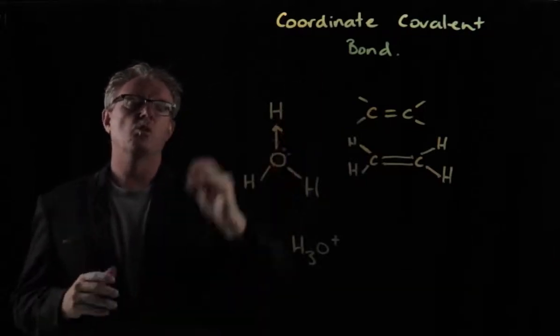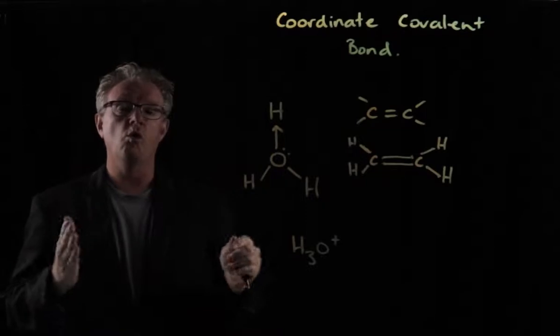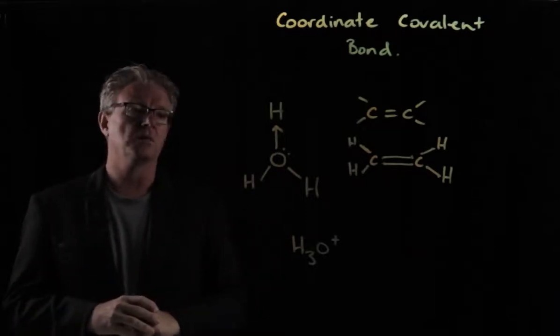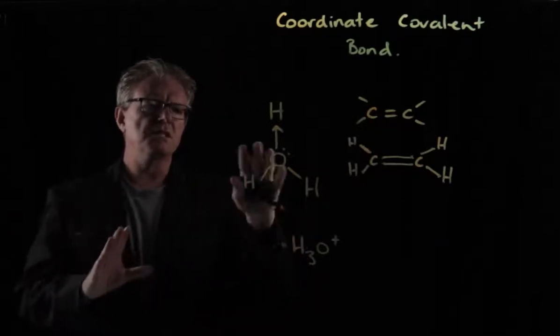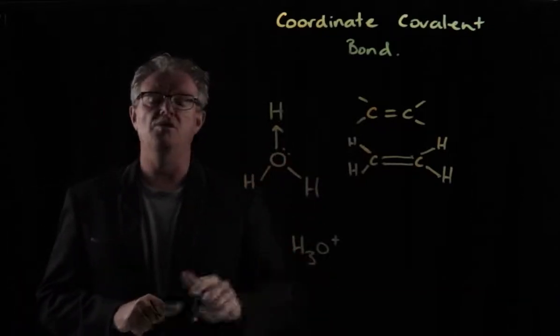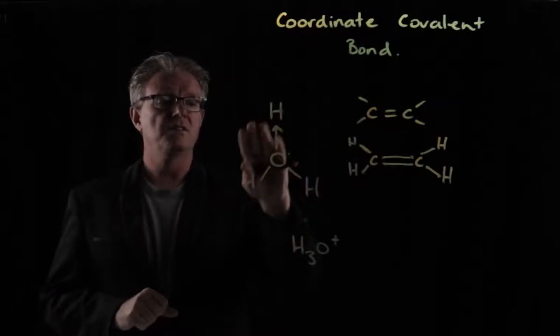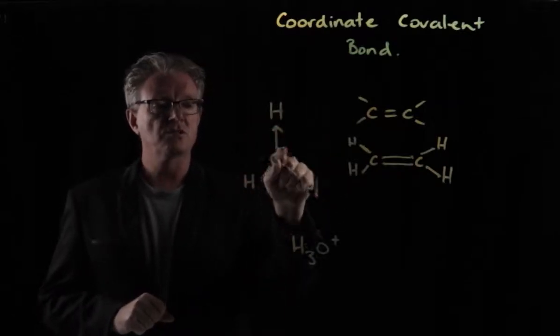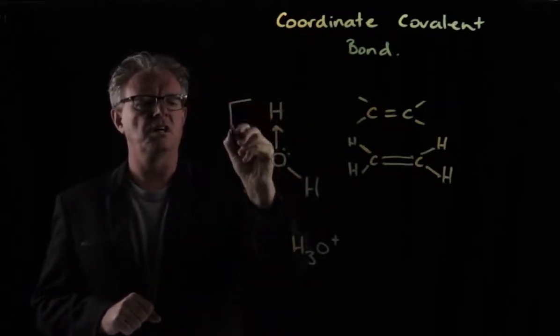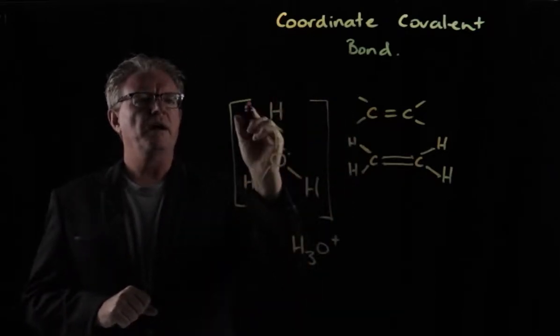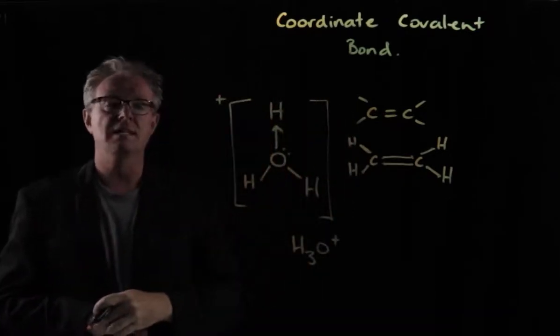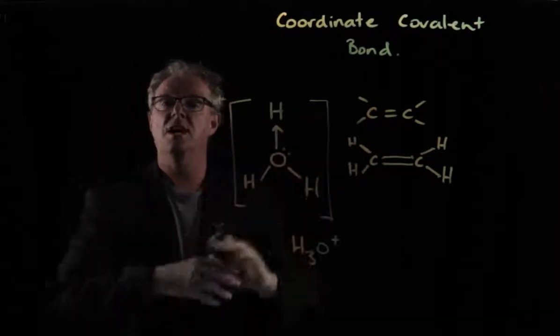And when that happens, we put an arrow to indicate that both of the electrons in that covalent bond are coming from the oxygen. And so that's called a coordinate covalent bond or a dative bond, depending upon what textbook you're reading. So this particular bond here is what's responsible for a hydronium ion. Now, of course, this central oxygen has a formal charge of plus one. And so what we do is we put brackets around that and just put a little plus there to indicate that this ion now has a charge of plus one.